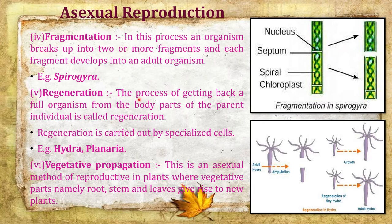In regeneration, the parent organism breaks into different parts, and each individual part forms a new parent individual. The process of getting back a full organism from the body parts of the parent individual is called regeneration. Regeneration is carried out by specialized cells. Example: hydra — different parts are cut, and each cut part forms a new organism.